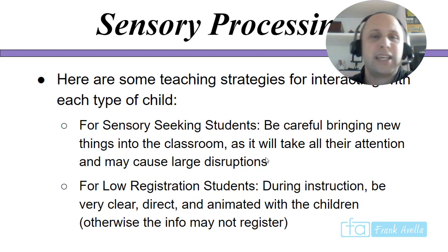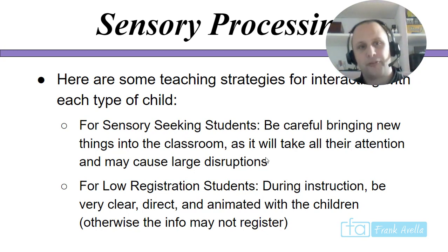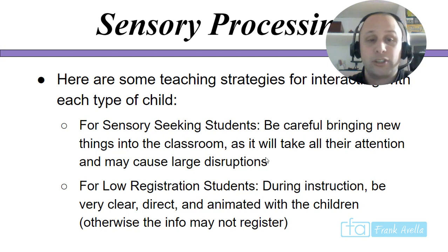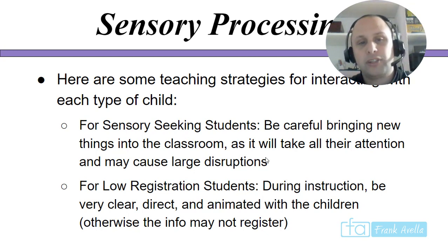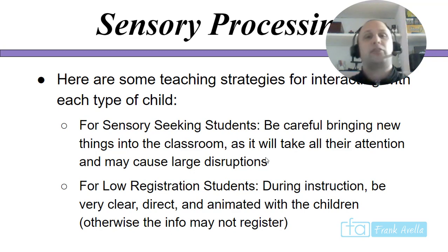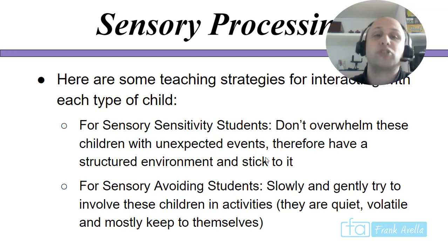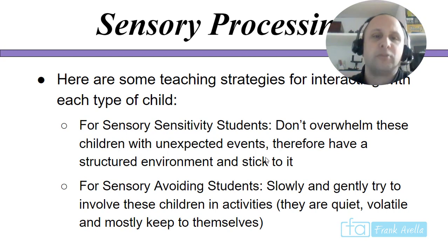Teaching strategies for each type: for sensory seeking students, be careful bringing new things into the classroom as it may cause large disruptions. For low registration students, be very clear, direct, and animated during instructions since the information is not going to register otherwise. For sensory sensitive students, don't overwhelm them with unexpected events — they need a structured environment. For sensory avoiding students, slowly and gently try to involve them in activities, as they're quiet and mostly keep to themselves.